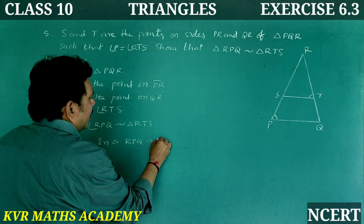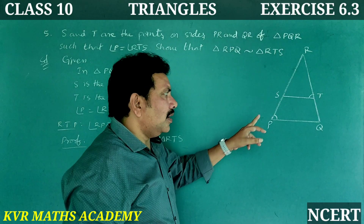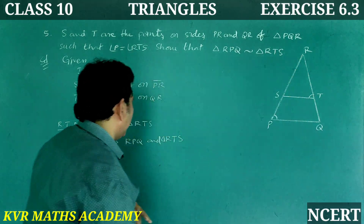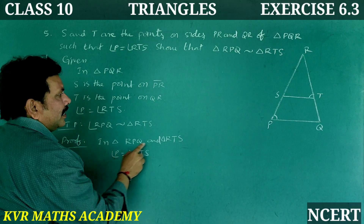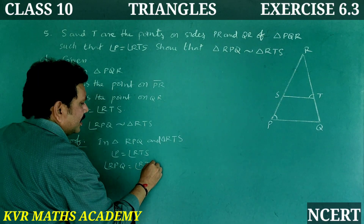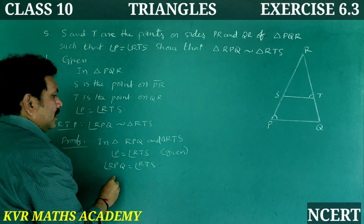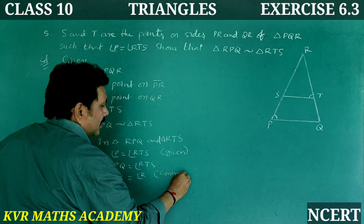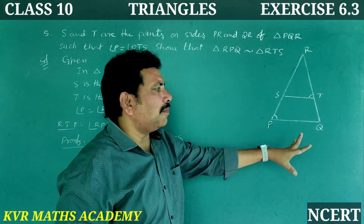Proof: Angle RPQ is equal to angle RTS — this is given. Next, in both triangles, angle R is equal to angle R, which is common. Angle R is common for both triangles RTS and RPQ.